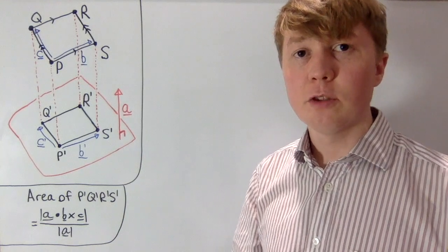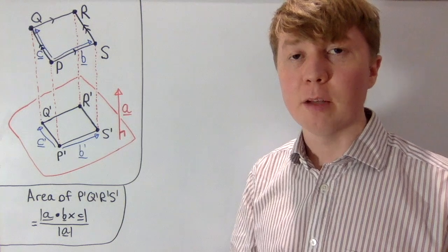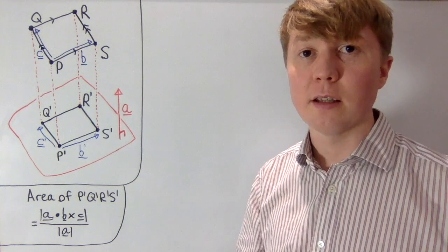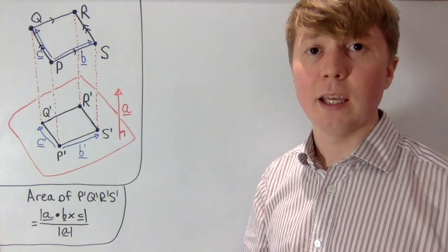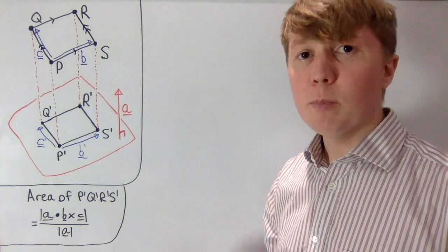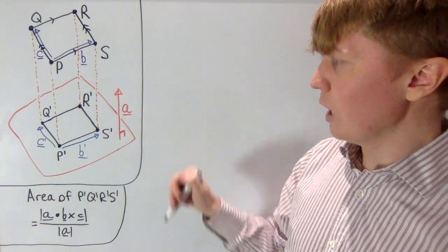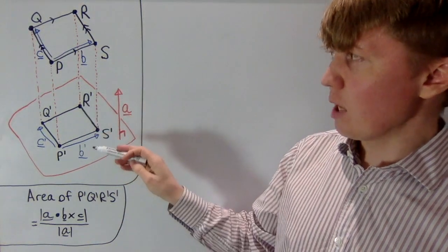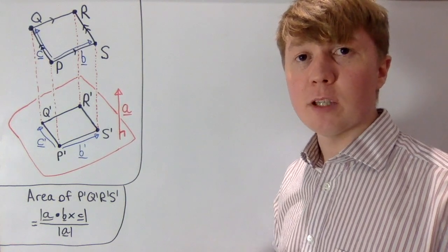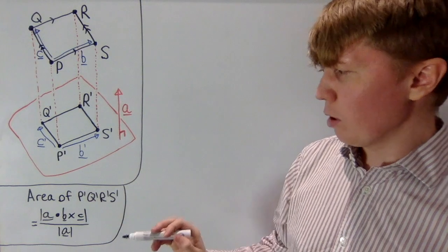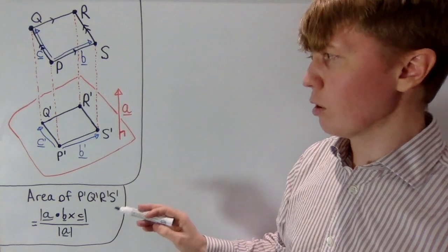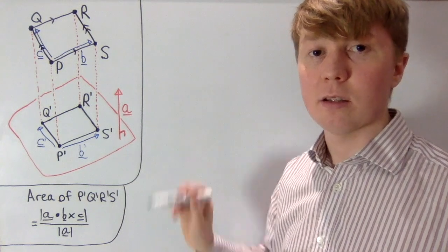You may have heard that the scalar triple product of three vectors is related to the volume of a parallelepiped formed by those three vectors. We're going to look at a similar related result which gives us further geometric insight into the scalar triple product. The key idea is that we've got two vectors b and c which form a parallelogram. If we project these onto a plane with normal a, then the area of this projection of our parallelogram onto this red plane with normal a is going to be equal to the scalar triple product of a, b, and c divided by the magnitude of a.